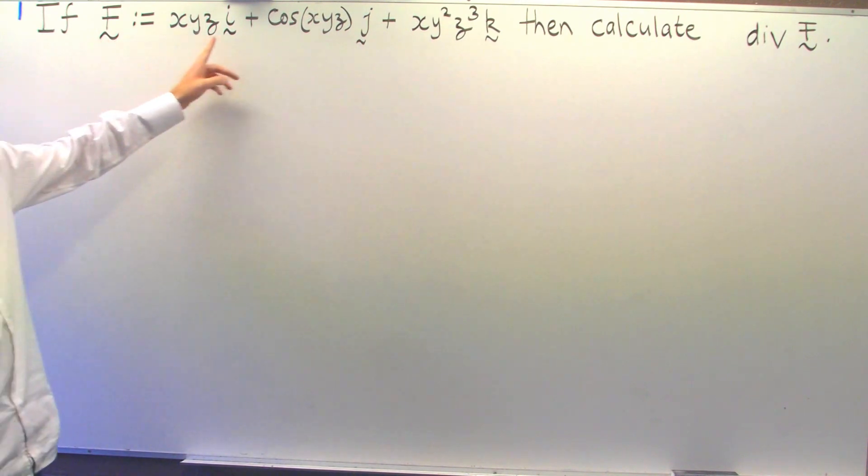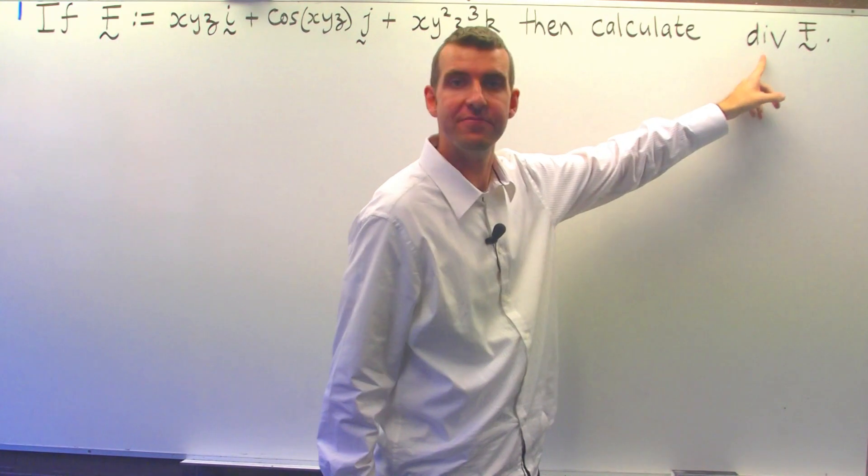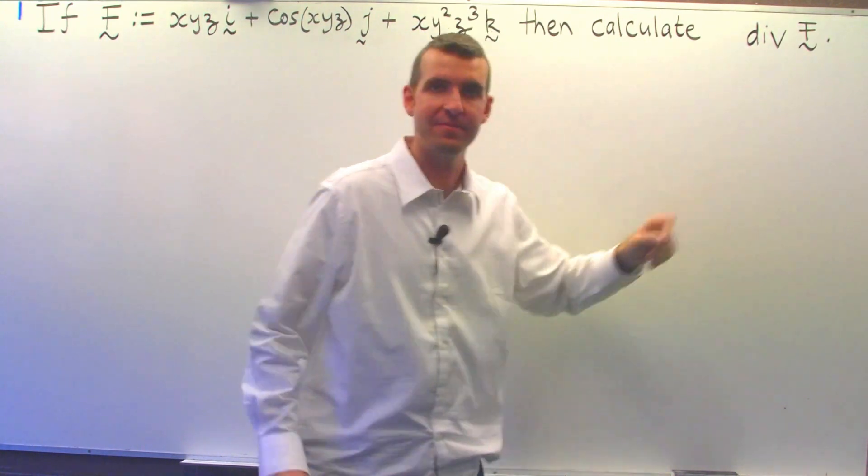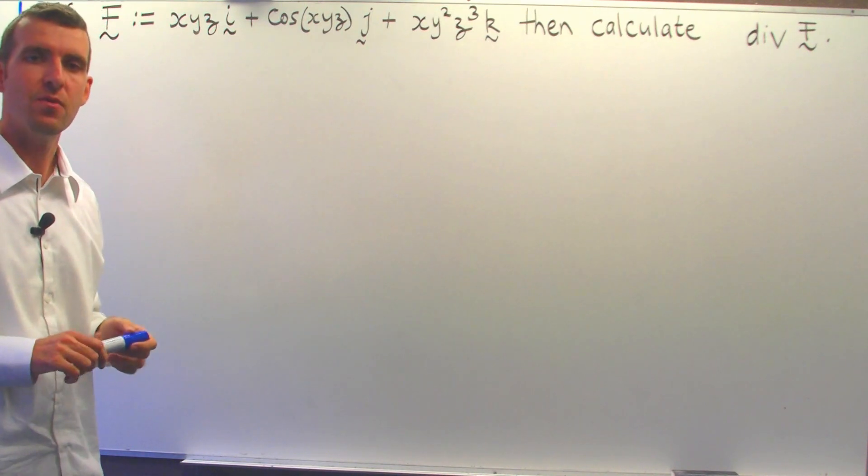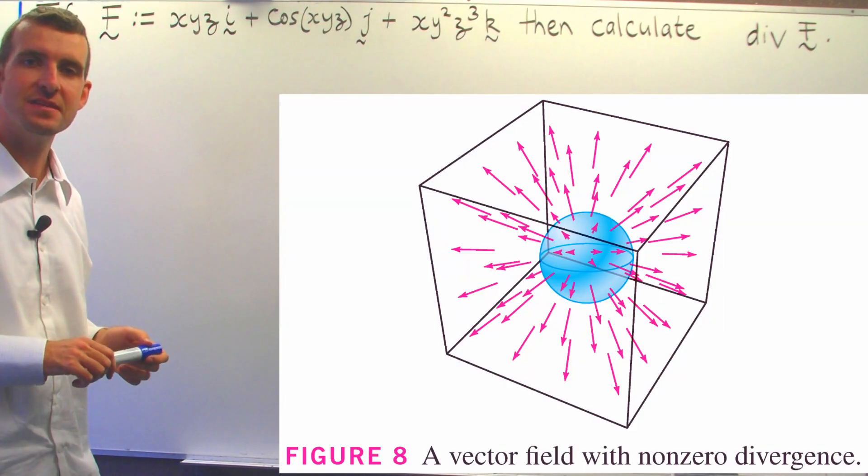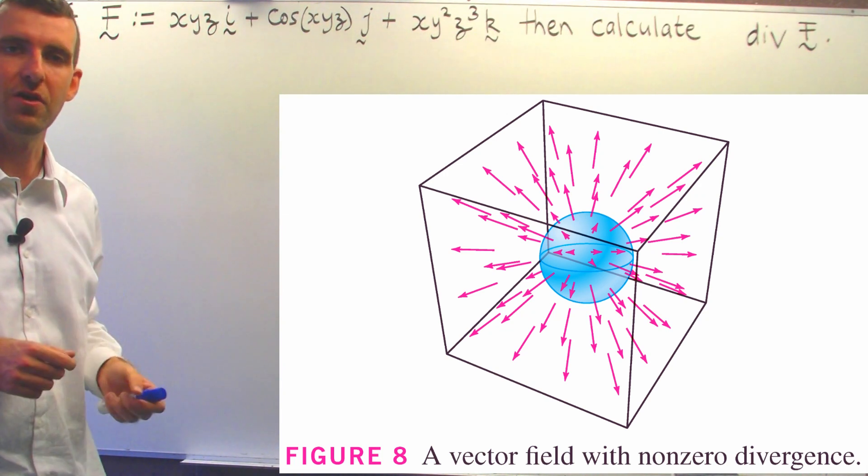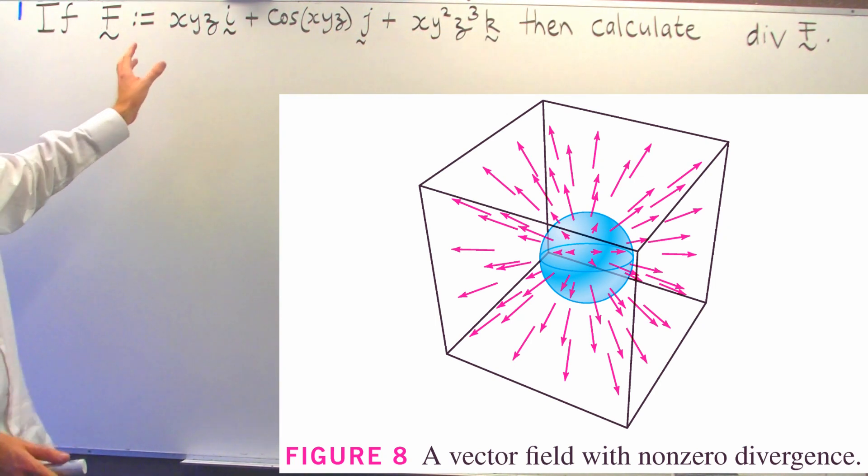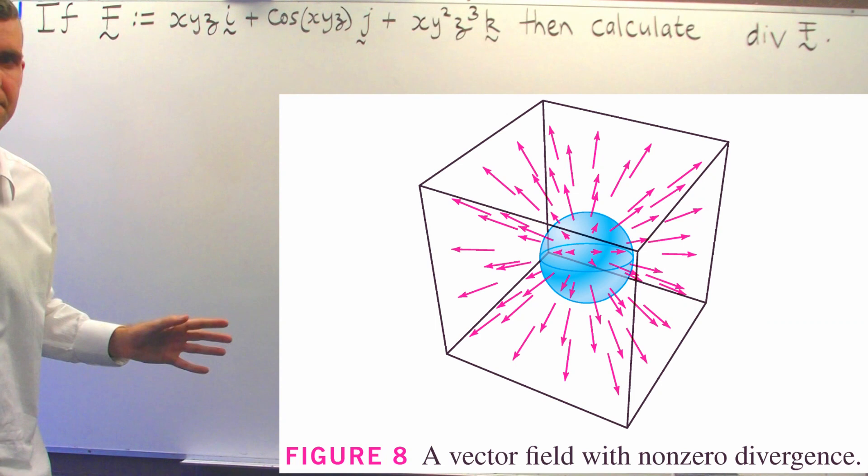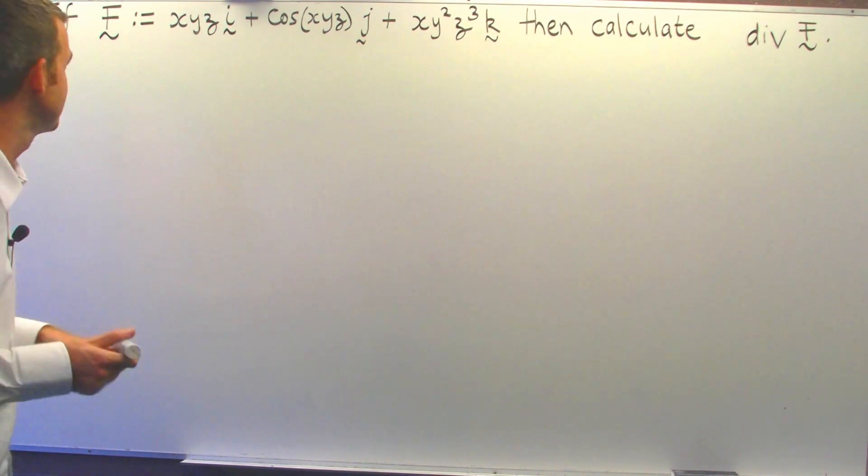We're given some vector field and we're asked to calculate the divergence of F. So what does divergence mean? Well loosely speaking, divergence gives a measure of the spread of a vector field. I'll talk a little bit more about that at the end, but this particular example is just a very simple, very basic example on how to calculate the divergence of a vector field.